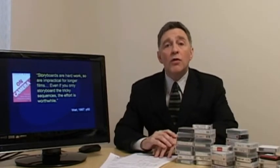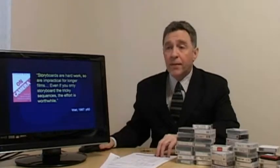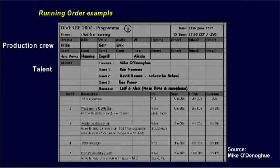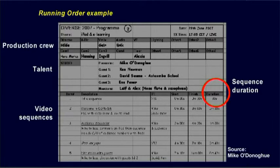Now, the third tool we want to make reference to here is called a running order. A running order that looks something like this is used in a studio production where you've got multi-cameras and different video sequences that are edited in as the video is recorded live. You can see that it involves all the different personnel involved in the studio production, including camera staff, studio presenters, and guests. And then there's a breakdown of all the video sequences required for the production, showing how long each sequence will last and where each will be sourced from, whether it's from a studio, a graphic, or a pre-recorded video sequence.